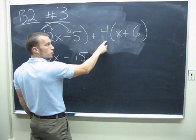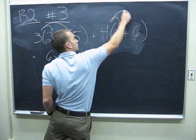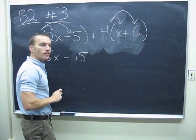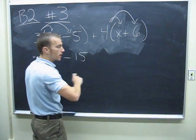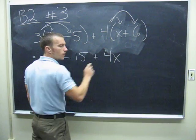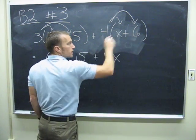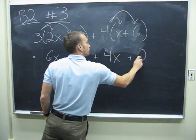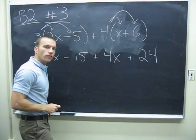Do the same over here, distribute the 4 throughout the parentheses. 4 times x, 4x. 4 times 6, positive 24.